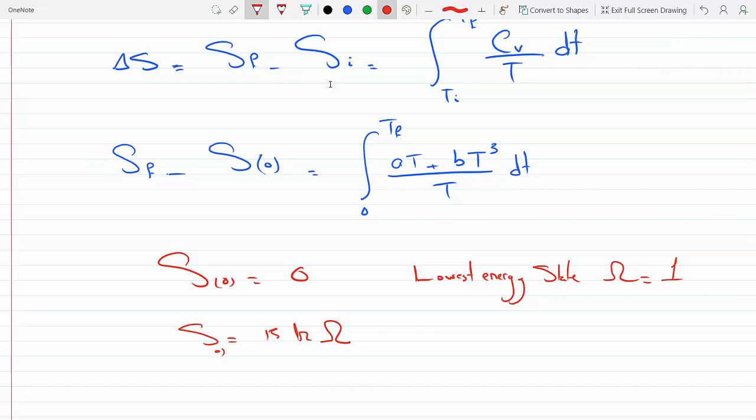There's only one way that the system can be arranged in its lowest energy state. S would be k ln of the lowest energy state and you would get zero because ln 1 is 0. This is often referred to as the third law of thermodynamics.